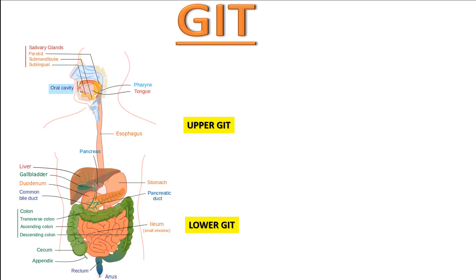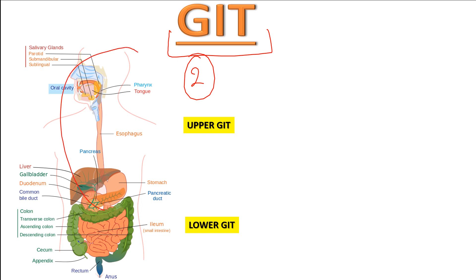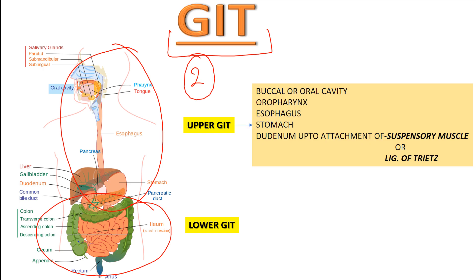Our gastrointestinal tract has mainly two parts: one is the upper gastrointestinal tract and one is the lower gastrointestinal tract. The upper gastrointestinal tract includes the buccal cavity — also called the oral cavity — the oropharynx, and the esophagus.